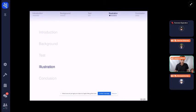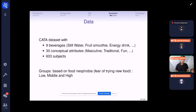As an illustration, we consider a check-all-that-apply dataset with 9 beverages, 30 conceptual attributes, and 603 subjects. And in fact, the groups are based on food neophobia, which is a fear of trying new food. So we have subjects in low food neophobia case, middle food neophobia, and high food neophobia.